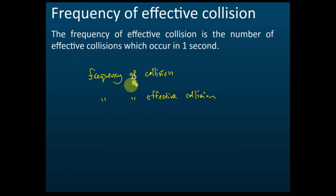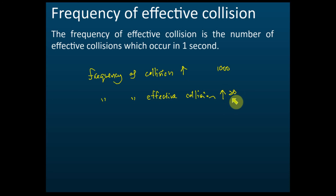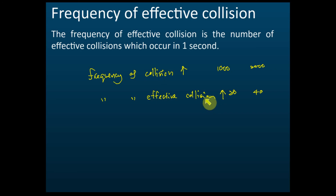The higher the frequency of collisions, the higher the frequency of effective collisions. For example, if particles collide 1,000 times in one second and only 20 of those are effective, then if they collide 2,000 times, 40 will be effective. So frequency of collision is how many collisions occur in one second, and frequency of effective collision is how many effective collisions occur in one second.